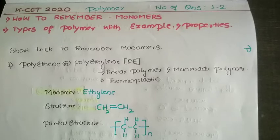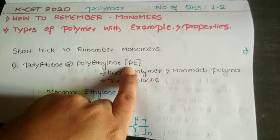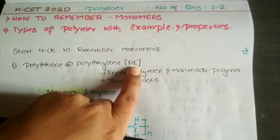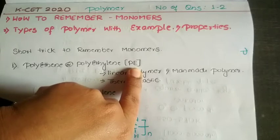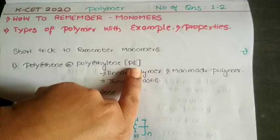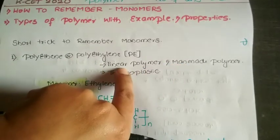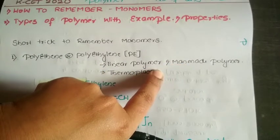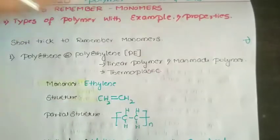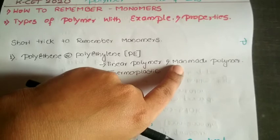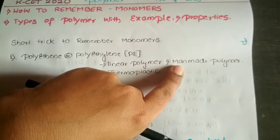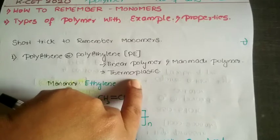The first polymer is polyethylene, also known as polythene, represented in short as PE. This is one of the most common polymers we use in daily life, like plastic bags — which are not biodegradable. It is a linear polymer, meaning the monomer units are linked to one another to form a long chain. It is a synthetic polymer and a thermoplastic.